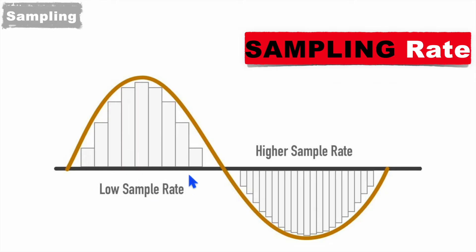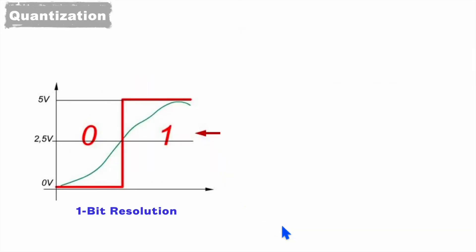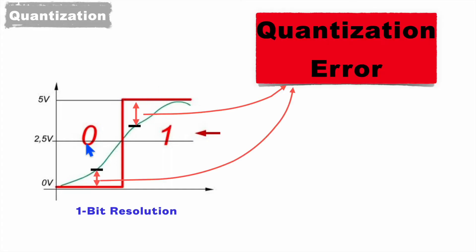We now understand that to track an analog signal better we should have a higher sampling rate, but there is one more thing: quantization. To understand from the basics, take an example of 1-bit resolution. Here either we can have logic 1 for 5 volt and logic 0 for 0 volt. Suppose we want to sample the analog signal at a point between 2.5 volt and 5 volt. The nearest quantization value is 1, corresponding to 5 volt. So when we sample that point it will be treated as 5 volt or logic 1 — this is a quantization error. Similarly, a point between 0 volt and 2.5 volt, being near 0 volt, will be treated as logic 0.